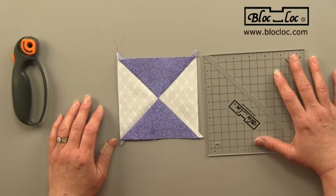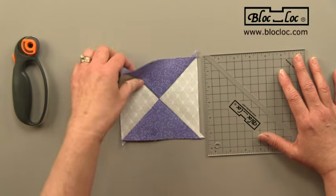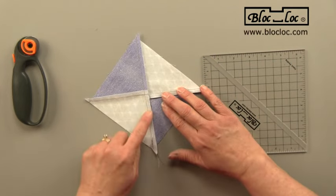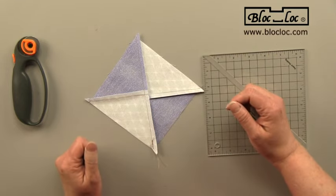So now let me show you how to square up a quarter square triangle or an hourglass unit. Once it's completed, you want to take this very last seam that was sewn and press it to one side. And now you can use Block Lock to trim it.